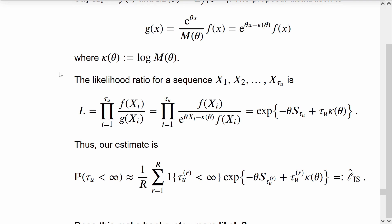Finally, we can say that our estimate for the infinite time ruin probability is this sum where we have the indicator whether or not the event happened multiplied by the likelihood ratio.